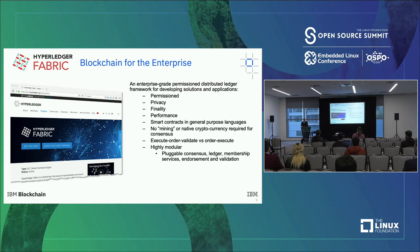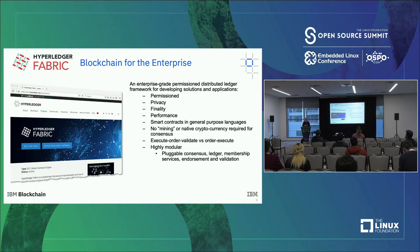Now let me get to Hyperledger Fabric. Once we realized there was a need, we did a fairly extensive survey of all the different systems that existed at the time — back in 2014-15. We realized there was no system that existed, so we embarked into developing our own with different principles really tuned towards the needs of the enterprise. We developed Hyperledger Fabric, which was then contributed to the Hyperledger project and is now developed in open source.